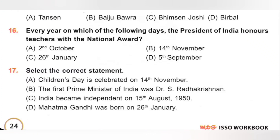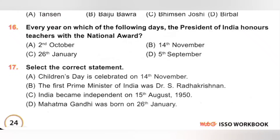17th. Select the correct statement. A. Children's Day is celebrated on 14th November — correct statement. B. The first Prime Minister of India was Dr. S. Radhakrishnan — incorrect, the first Prime Minister was Pandit Jawaharlal Nehru. C. India became independent on 15th August 1950 — incorrect, it was 1947. D. Mahatma Gandhi was born on 26th January — incorrect, he was born on 2nd October. So the correct statement is option A: Children's Day is celebrated on 14th November.